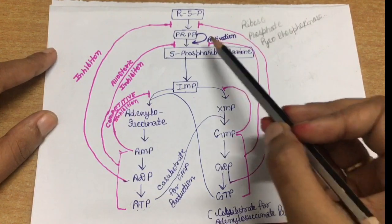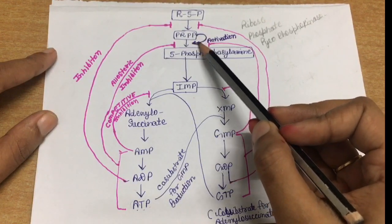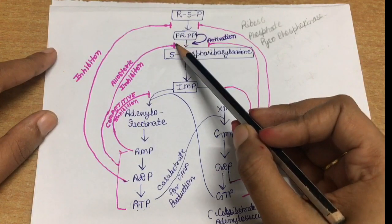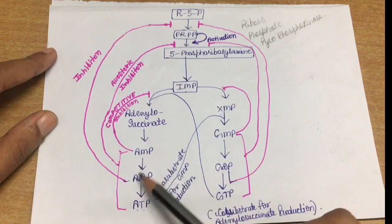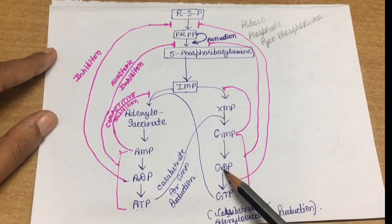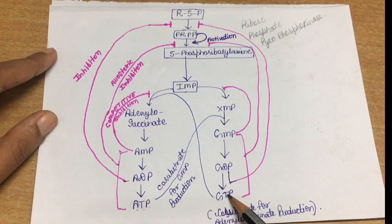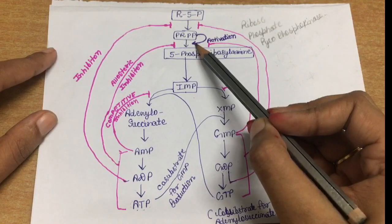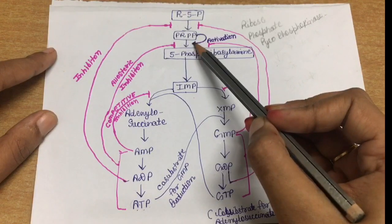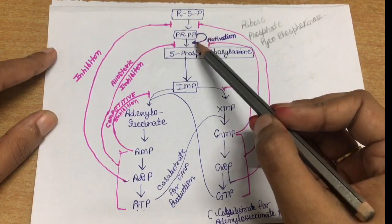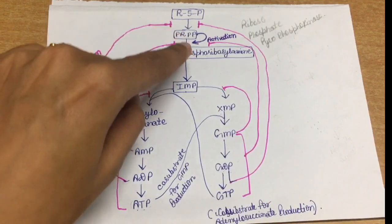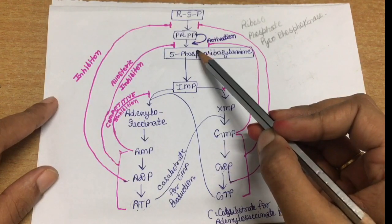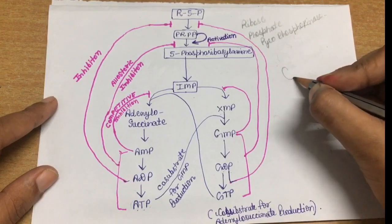Amidophosphoribosyltransferase is activated by the presence of PRPP — this is called feed-forward activation, because the enzyme is stimulated by its substrate PRPP. This enzyme is also allosterically inhibited by the presence of AMP, ADP, ATP, or GMP, GDP, GTP. This step — the conversion of PRPP into 5-phosphoribosylamine — is the first committed step of purine biosynthesis.